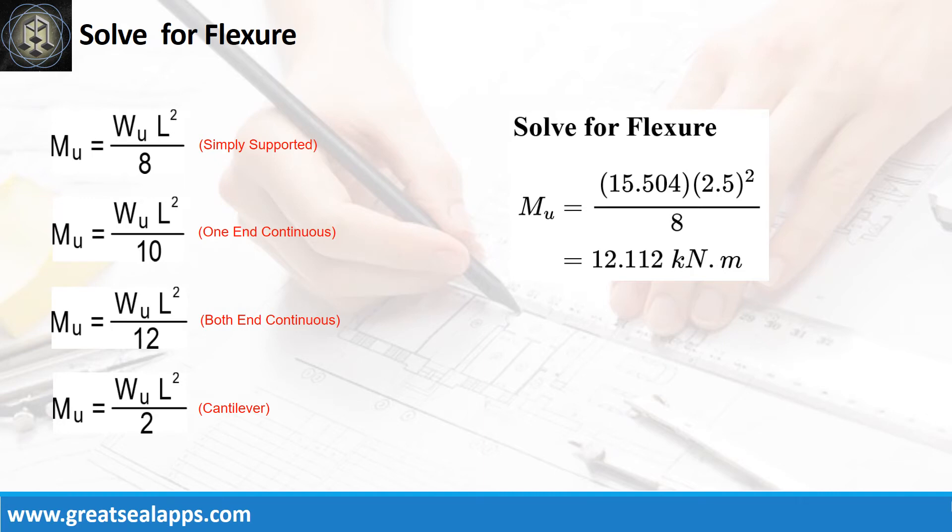Given factored load equals 15.504 kN per meter and L equals 2.5 meters, the maximum design moment is 12.112 kN per meter.